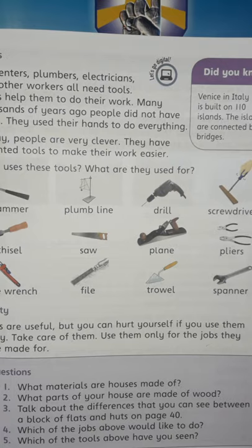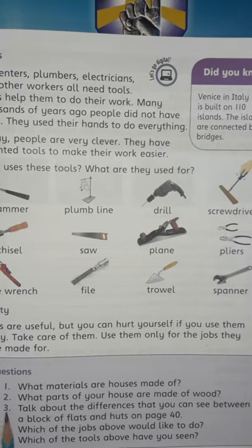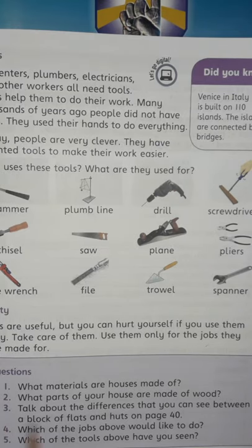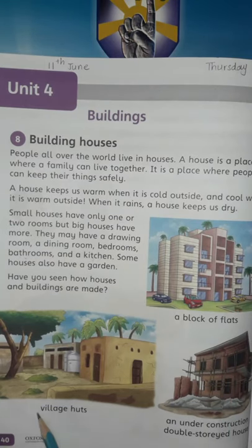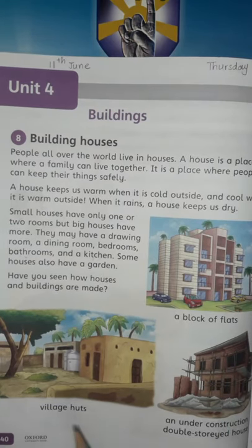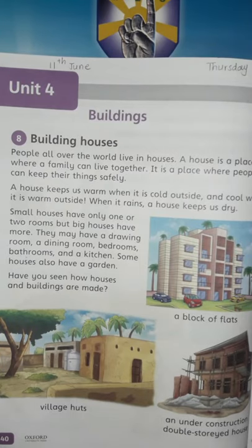Look at the door — is it made of wood? Yes, doors are made of wood. Window frames are made of wood, and cabinets are made of wood. Now talk about the differences you can see between a block of flats and huts on page 40.